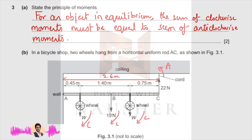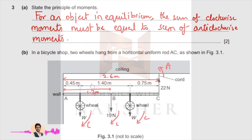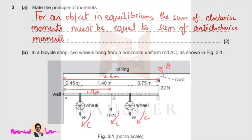The distances are: W multiplied by 0.45. The 19 Newton force distance from the pivot is 2.6 divided by 2, which is 1.3 meters. The distance of the last wheel is 1.4 plus 0.45, giving 1.85 meters. So the moment of these three forces added together equals the moment of the 22 Newton force, which is 22 multiplied by 2.6.